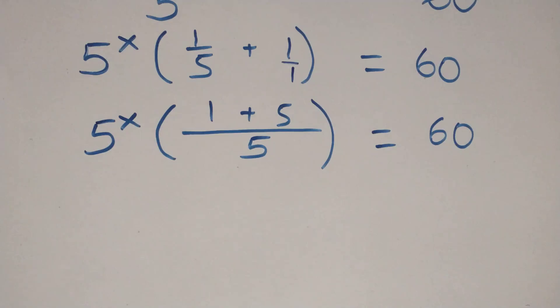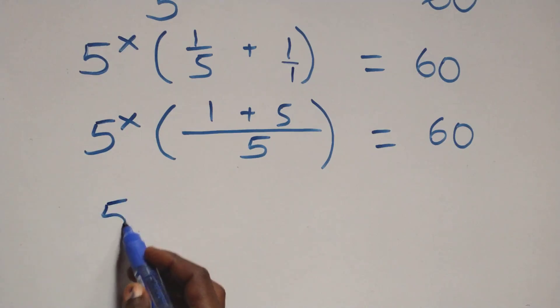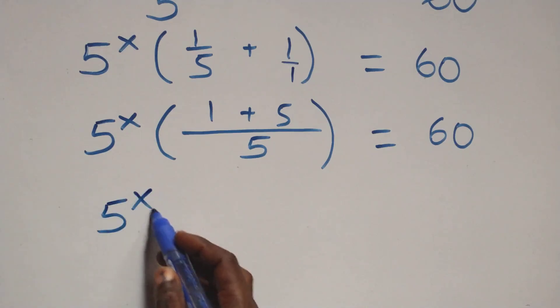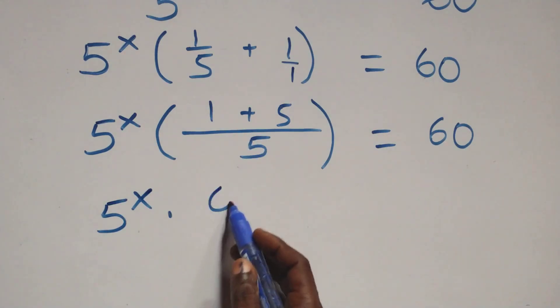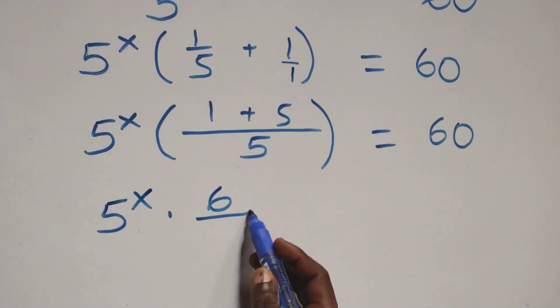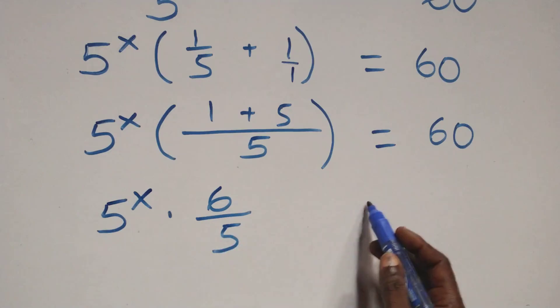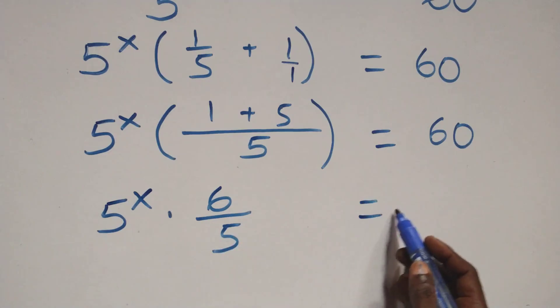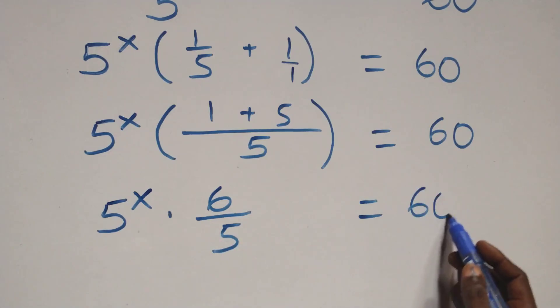Next step: we have 5 raised to power x times (1 plus 5), that is 6, over 5, equals 60.